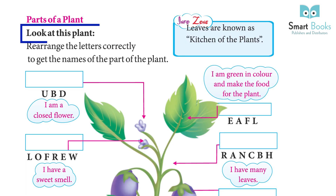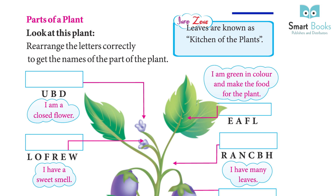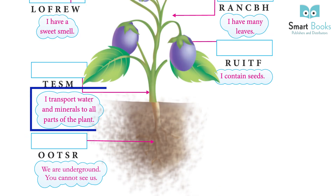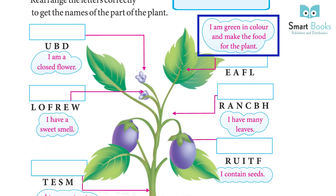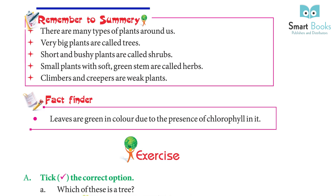Parts of a plant: look at this plant. Rearrange the letters correctly to get the names of the parts of the plant. Info zone: leaves are known as the kitchen of the plants. I am a closed flower, I have a sweet smell. I transport water and minerals to all parts of the plant. We are underground — you cannot see us.